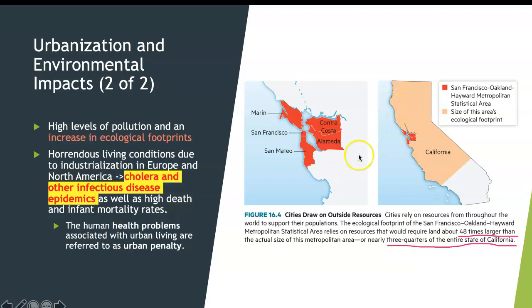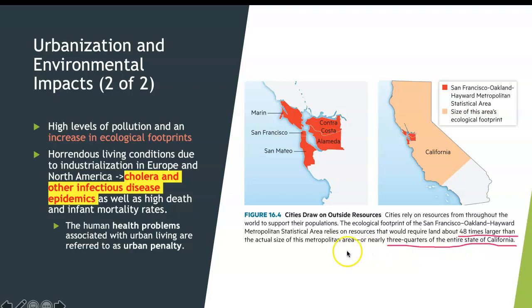For example, in the San Francisco, Oakland, and Hayward metropolitan area, it has a fairly small percentage of the area size compared to the size of California. But its ecological footprint is 48 times higher than the actual size of this area — that's nearly three quarters of the entire state of California.